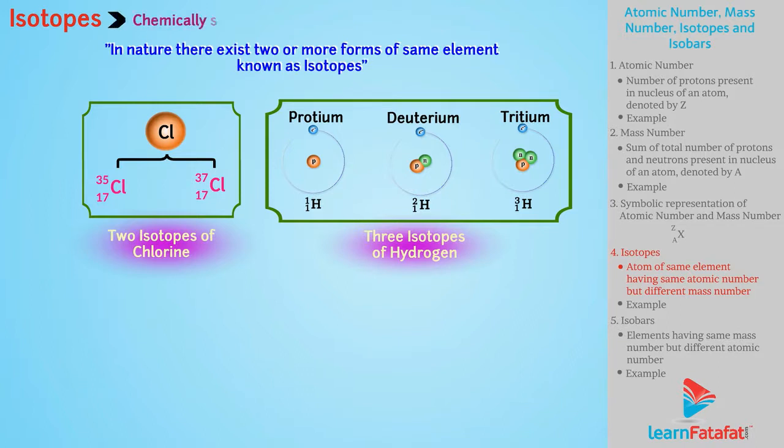Isotopes are chemically same but physically different from each other. This difference occurs due to change in number of neutrons present in an atom of that element.